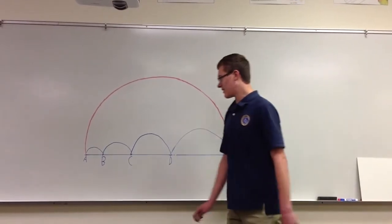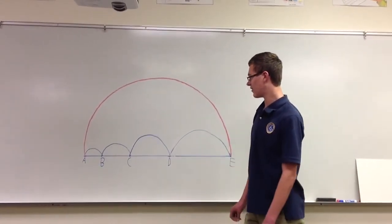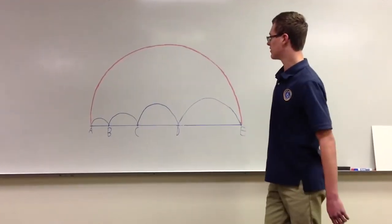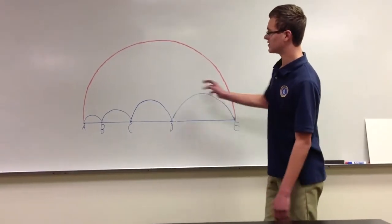You can know this by knowing that the radius of all of the smaller semicircles are equal to the radius of the larger red circle.